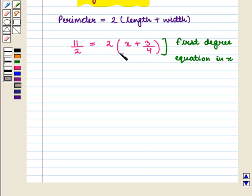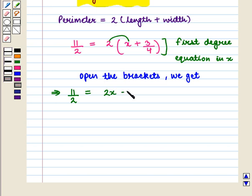First we open the brackets and we get 11/2 = 2x + 2(3/4), which further implies that 11/2 = 2x + 3/2.